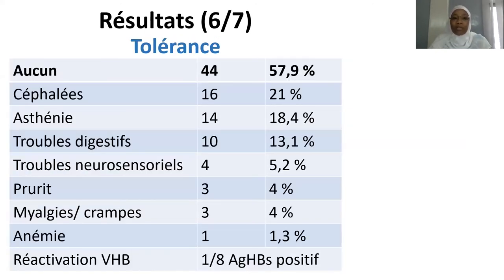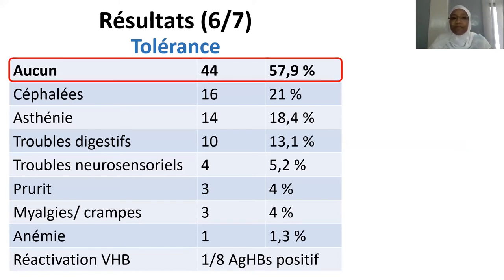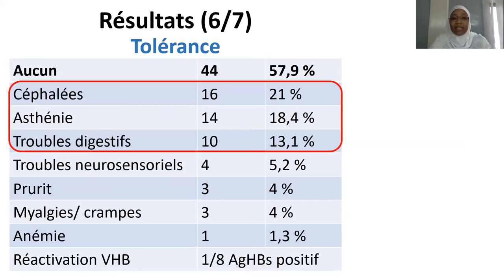Du point de vue de la tolérance du traitement, 58% des patients n'ont notifié aucun effet secondaire. Les effets secondaires les plus fréquemment enregistrés étaient les céphalées chez 21% des patients, l'asthénie chez 18% des patients, et des troubles digestifs non spécifiques chez 13% des patients. Nous notons également la survenue d'un cas d'anémie et d'un cas de réactivation du virus de l'hépatite B sur 8 patients co-infectés.